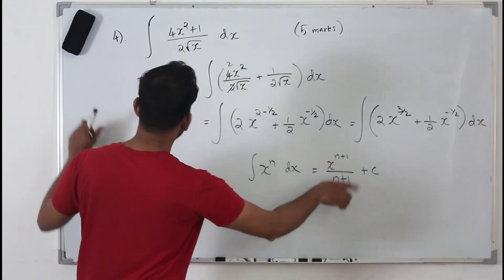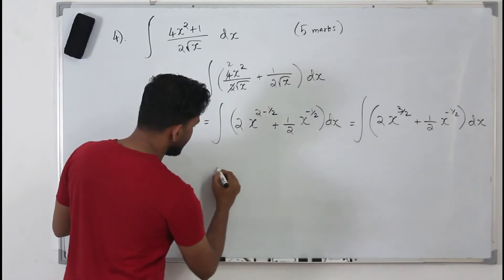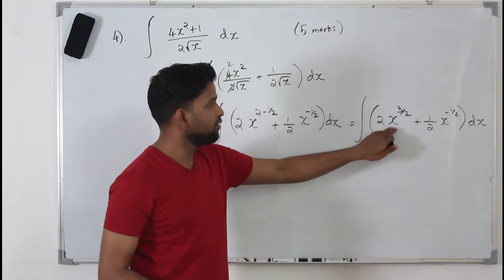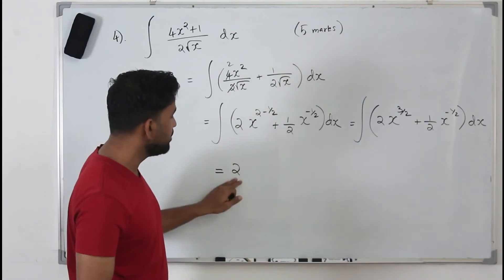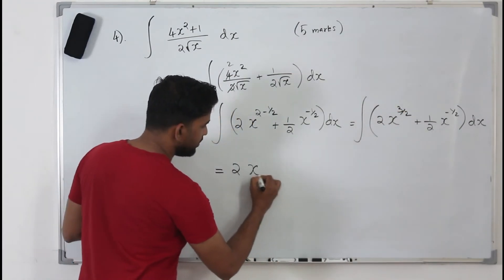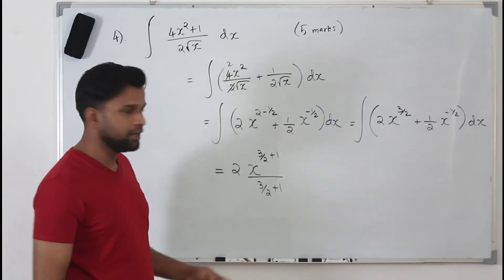So this is the formula we are going to apply here. So x to the power n, the constant to keep it as it is, because when you have a constant in multiplication, you don't need to integrate the constant. Keep it as it is, x to the power n, when you integrate it becomes x to the power n plus 1 by n plus 1. That's how you integrate.